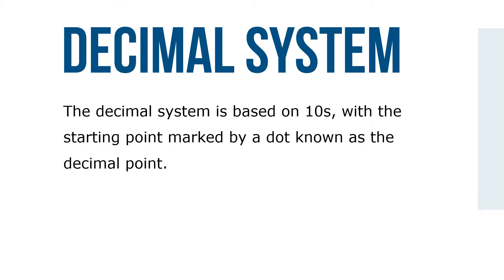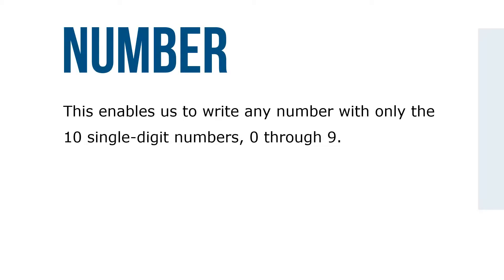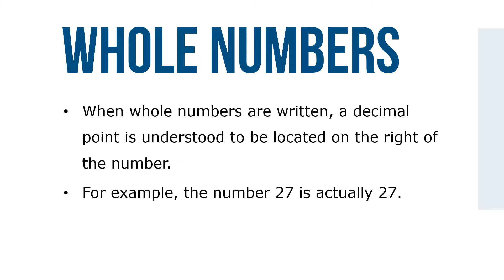The decimal system is based on tens, with the starting point marked by a dot known as the decimal point. The major advantage of our decimal system over previous systems is that the position of the digit to the left or the right of the decimal point affects its value. This enables us to write any number with only the 10 single-digit numbers 0 through 9. In this course we'll work with the places to the left of the decimal point, known as whole numbers.